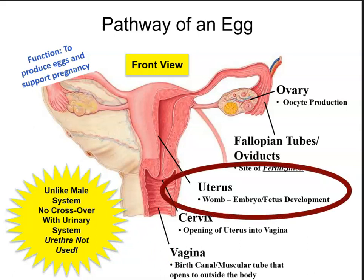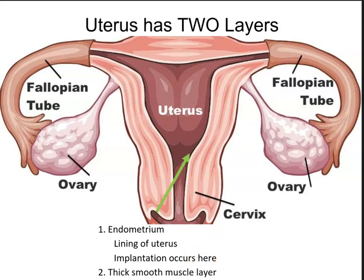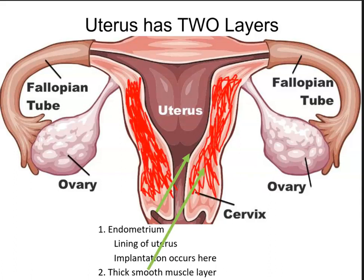The uterus is a very important structure for the development of the fetus. Internally, the uterus has two layers. The innermost layer is the endometrium, the lining of the uterus where implantation of the fertilized egg occurs. If there is no fertilization, this lining sheds once a month during menstruation. The middle muscular layer is the myometrium, whose smooth muscle contractions allow for expulsion of the baby during childbirth.